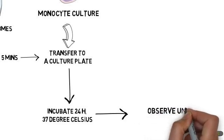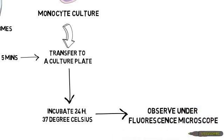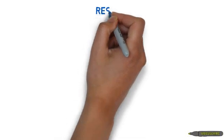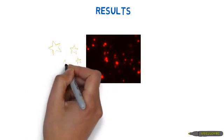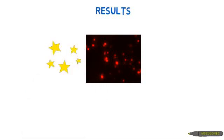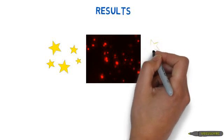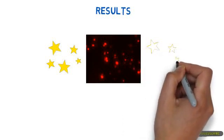After the incubation, I will observe the cells under a fluorescence microscope. Here we see that the transfection is successfully carried out, and the monocytes are glowing like Christmas tree lights. Amazing, isn't it?